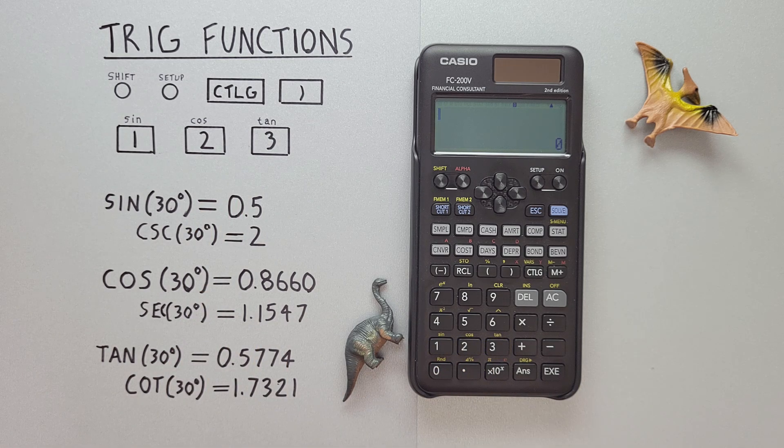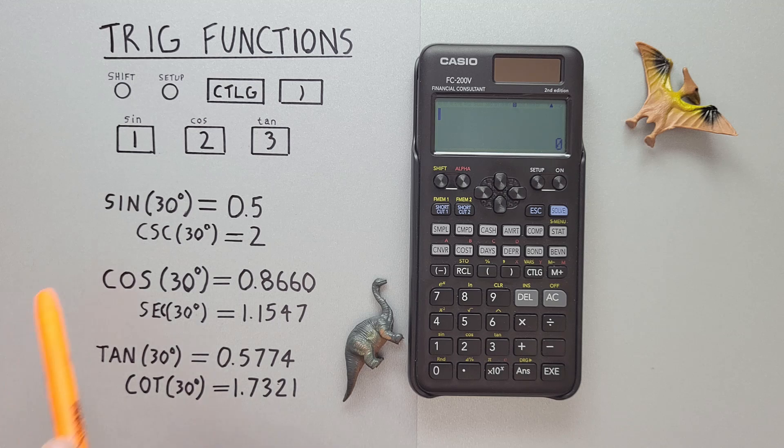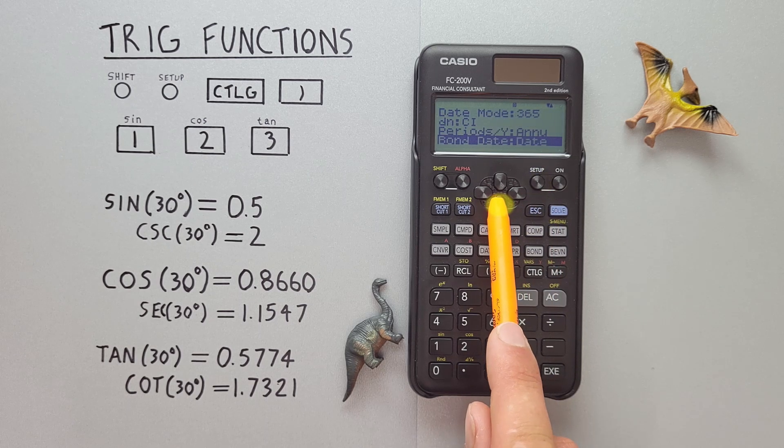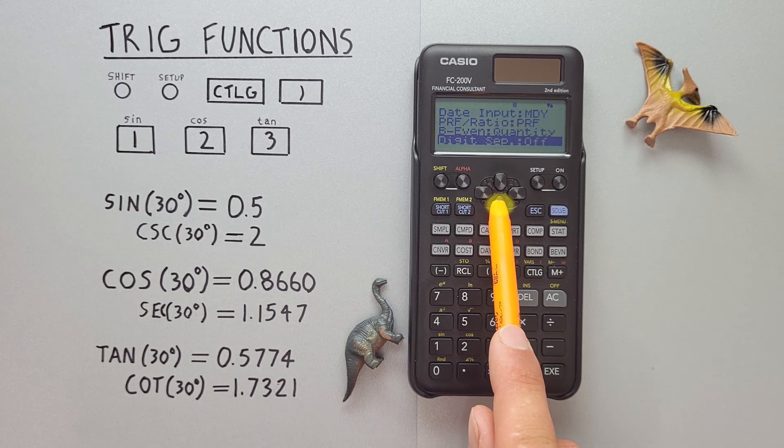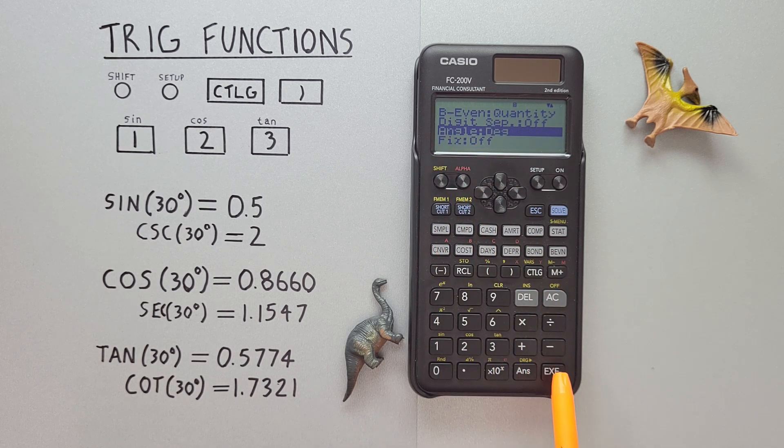The first step when working with trig functions on this calculator is to tell our calculator what format we're using. For these examples, we'll be using degrees. So to set that we go to setup, scroll down until we see angle, select that.